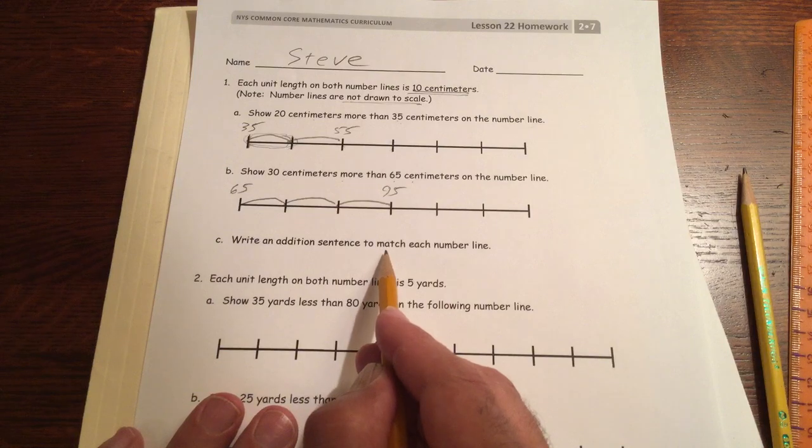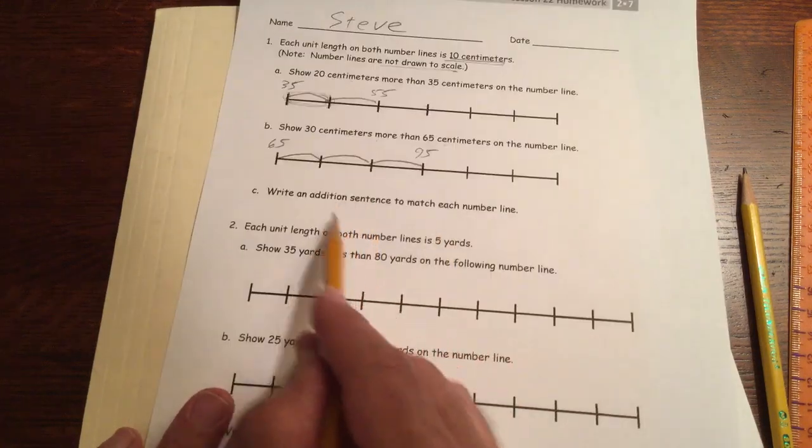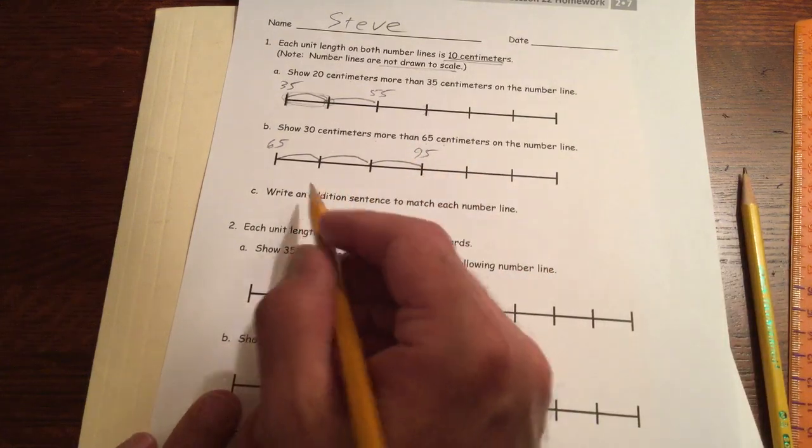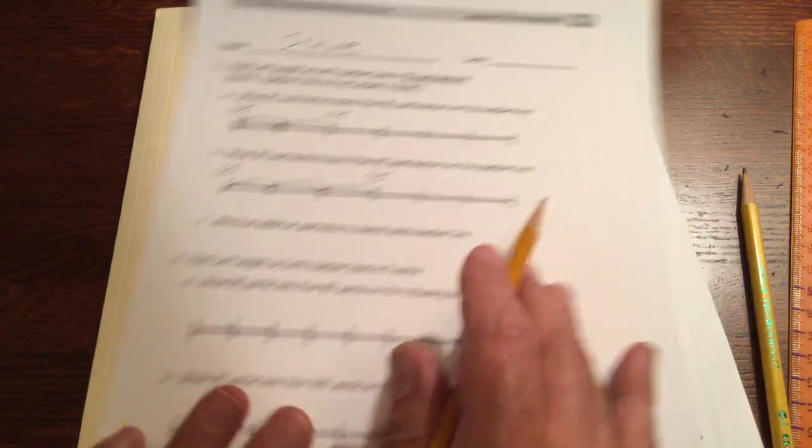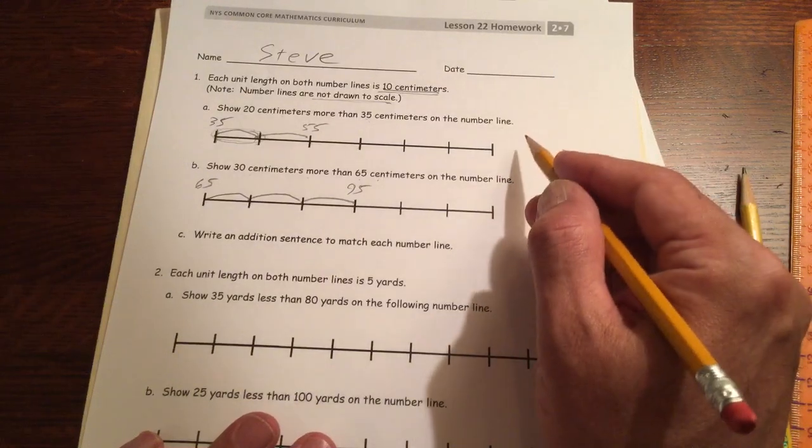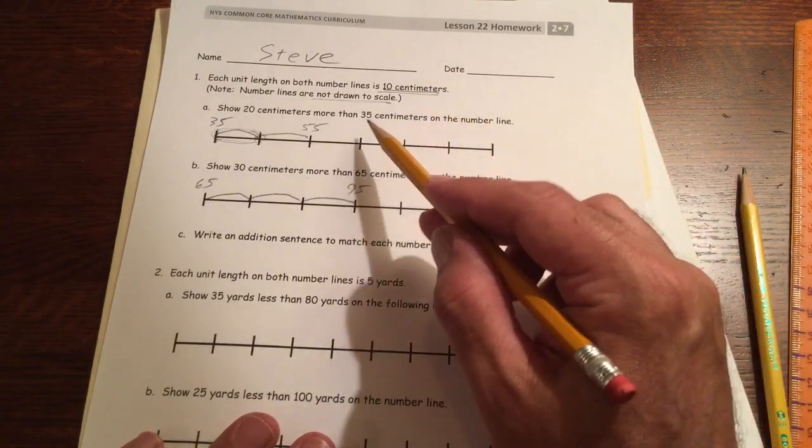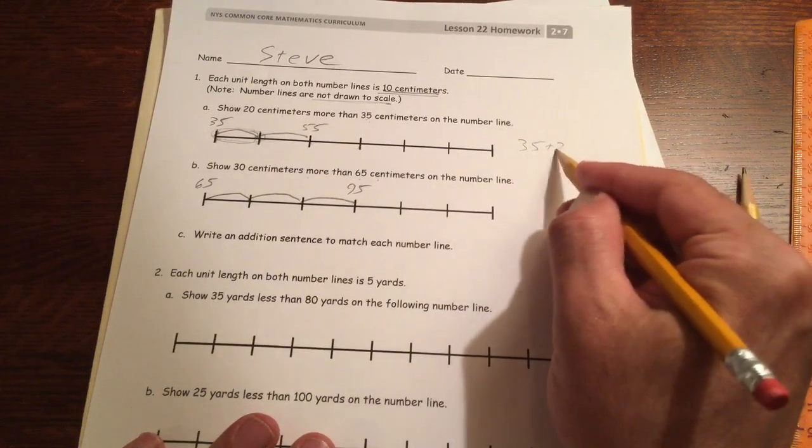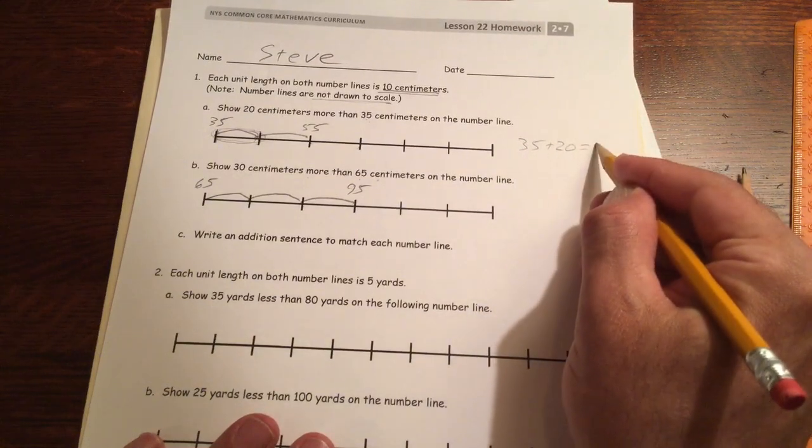Write an addition sentence to match each number line. You can write it here, or you can write it next to each number line. The first one, I'm going to write it here next to the number line. 20 more than 35, so that started with the 35, added the 20, and it equaled 55.